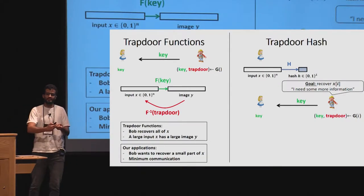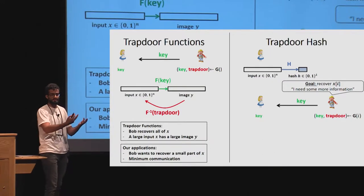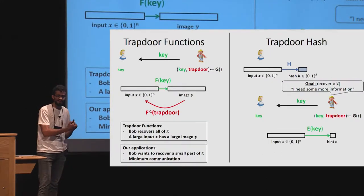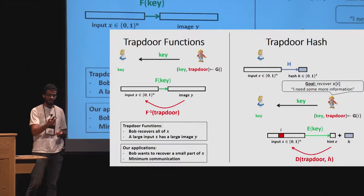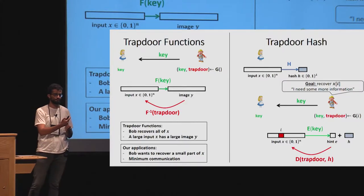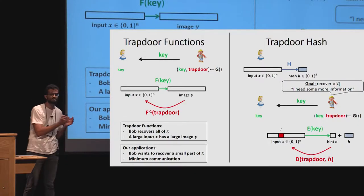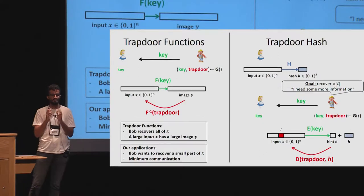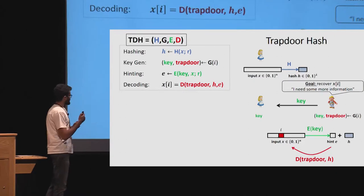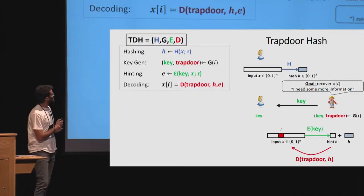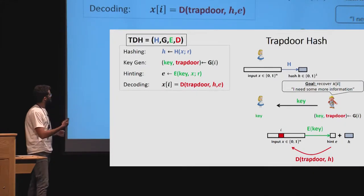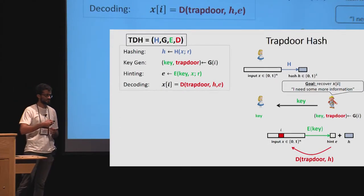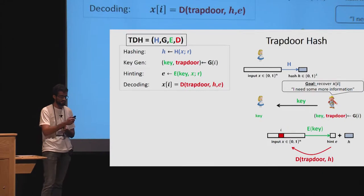The trapdoor part allows Bob to generate a key and trapdoor, publish the key, and send it to Alice. Given the key, Alice computes a small image of x called the hint. Only Bob, who has the trapdoor, can use the hint and hash value to recover x_i. The syntax consists of: a hashing function (takes input x and randomness r), key generation (produces key and trapdoor), a hinting function, and a decoding algorithm that recovers x_i from the hash, hint, and trapdoor.